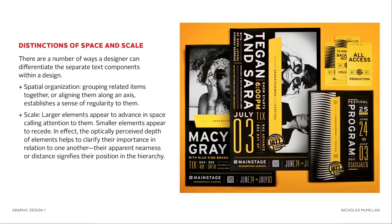There are a number of ways a designer can differentiate separate text components within a design. One is with spatial organization — grouping related items together or aligning them along an axis establishes a sense of regularity. We can also do this with scale: larger elements appear to advance in space, calling attention to them. The optically perceived depth of elements helps clarify their importance in relation to one another — their apparent nearness or distance signifies their position in the hierarchy.